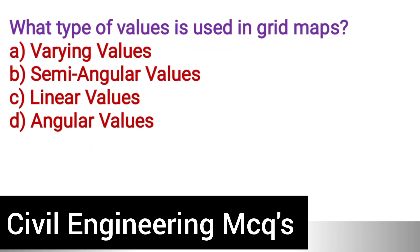Next question: What type of values is used in grid maps? Option A: Varying values. Option B: Semi-angular values. Option C: Linear values. Option D: Angular values. The correct answer is option C, linear values.